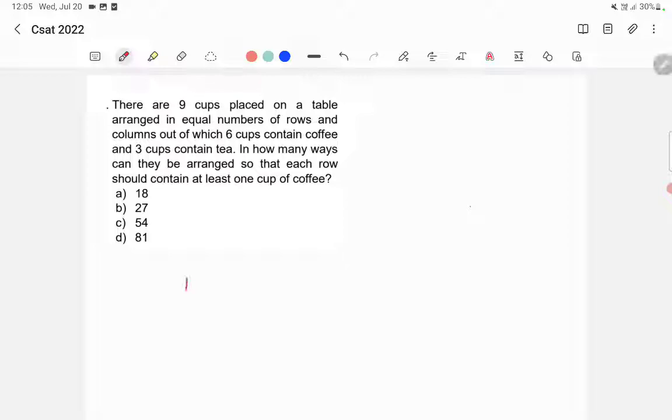The question says that there are nine cups and there are equal number of rows and columns. So there will be three rows and three columns. So there are nine cups.